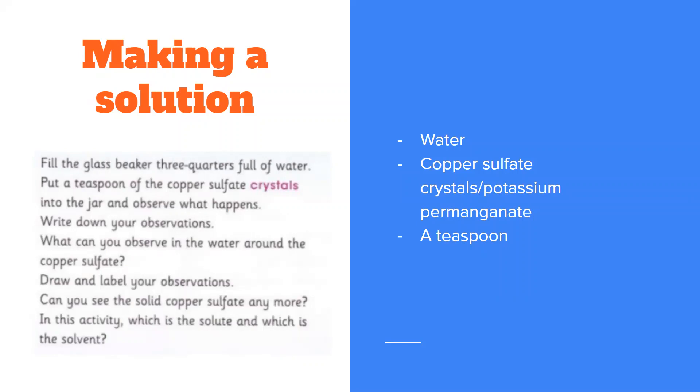What you need to do: you need to fill the glass beaker three quarters full of water. Put a teaspoon of copper sulfate or potassium permanganate or salt crystals into the jar and observe what happens. And write down your observations like a real scientist. You need to write down your observations in your copy books or on paper.